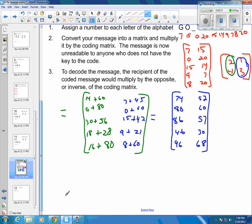So when you sent this code, you would send 74, 52, 80, 60, 86, 57, 46, 30, 96, and 68. And nobody would be able to get that and then be able to interpret what that actually was.